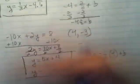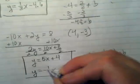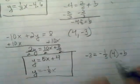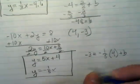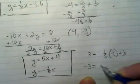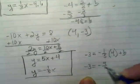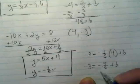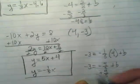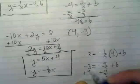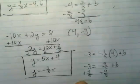I'm going to rewrite this. It's a little messy. This is going to end up being negative 3 is equal to negative 4 over 5 plus b. I'm going to add 4 over 5. 4 over 5 is the same as 0.8.